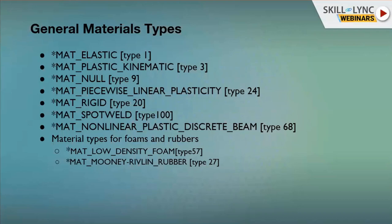MAT_SPOTWELD (Type 100) is used for spot weld material and applies to beam element Type 9 only and to solid element Type 1 with Type 6 hourglass controls; failure models apply to both beams and solid elements. MAT_NONLINEAR_PLASTIC_DISCRETE_BEAM (Type 68) is used for simulating non-linear elasto-plastic linear viscous behavior of beams. For foams and rubbers: low density foam is used for seat cushions and side impact dummy paddings, and Mooney-Rivlin rubber is mainly used for wheel tires.